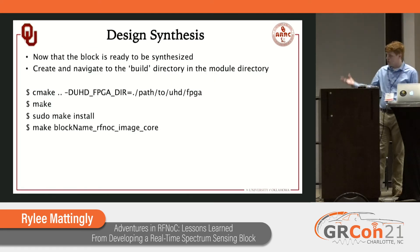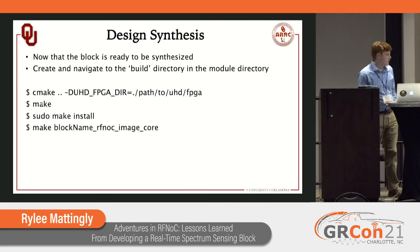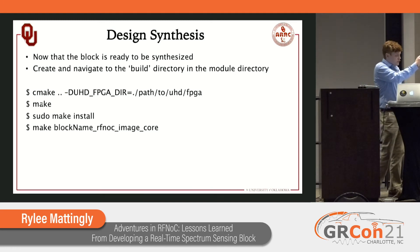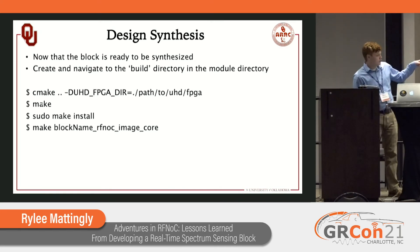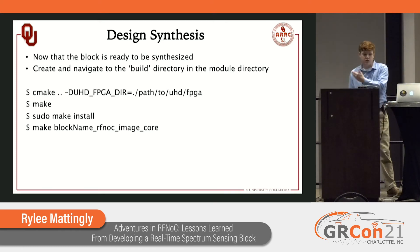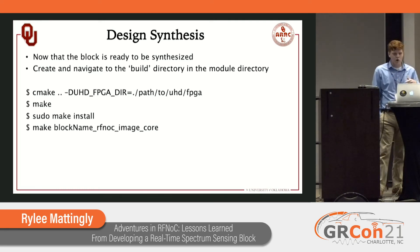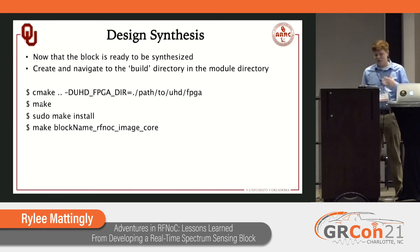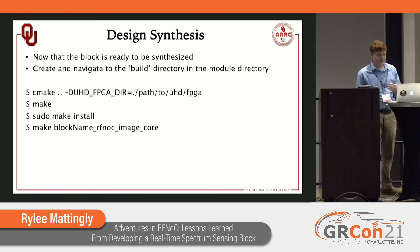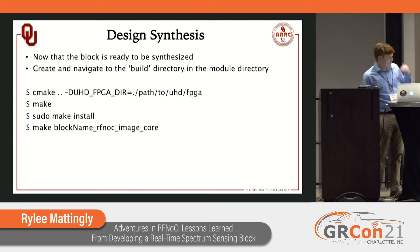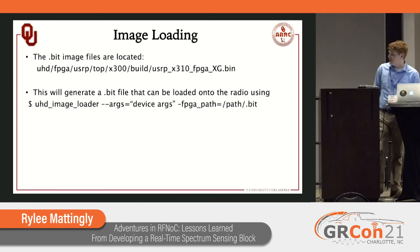For design synthesis, we make a build directory from our module, go in there, and use CMake with the directory to the UHD FPGA path, then go through our standard make incantations. After make install, we should actually see the block in GNU Radio — that tells you if you're on the right track. Then when we run make with the image core name, it will go ahead and make that image. This is your opportunity to go get a snack — we saw anything from 45 minutes to an hour and a half as pretty standard. If you were doing something like instantiating block RAM, it could be a day or so.